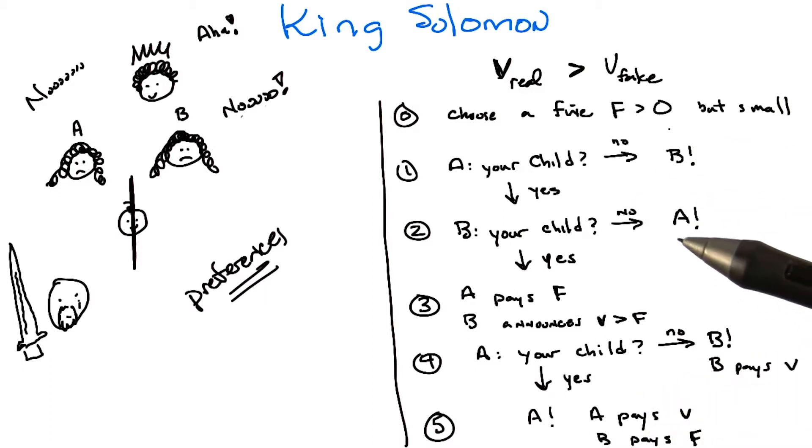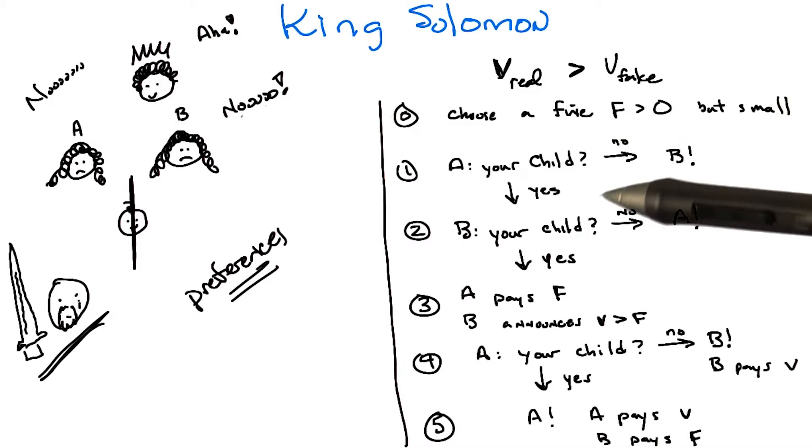And the only person who loses in this is the poor person with the sword. Oh, again. Kind of sad, isn't it? So sorry. And there you go. So I think that that's a pretty interesting example of how you might kind of do mechanism design. That is really interesting.